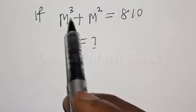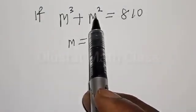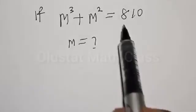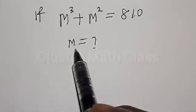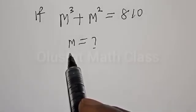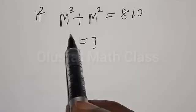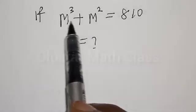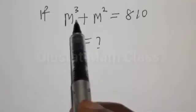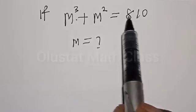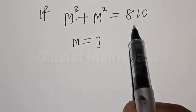If M³ plus M² is equal to 810, what is the value of M? Welcome to my class. In today's class, we want to look at how we can quickly find the value of M from this given equation: M³ plus M² is equal to 810.